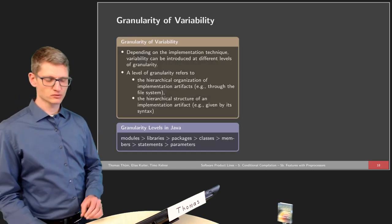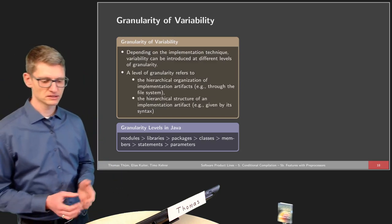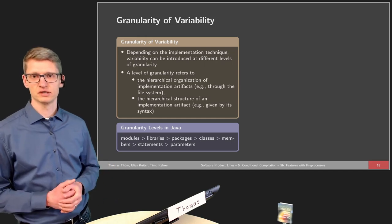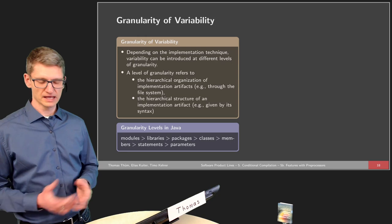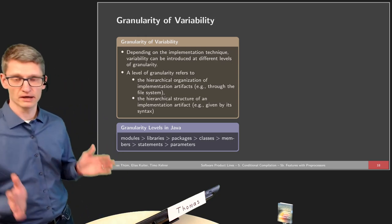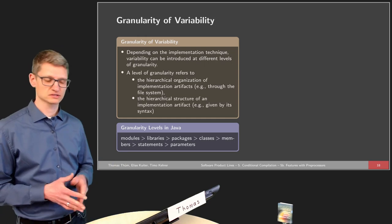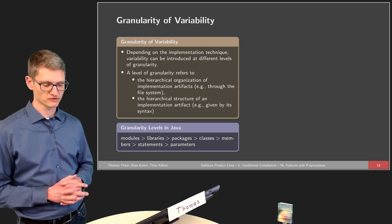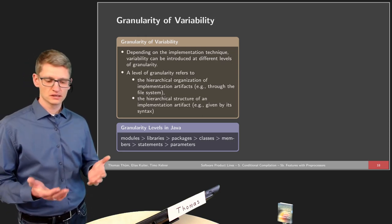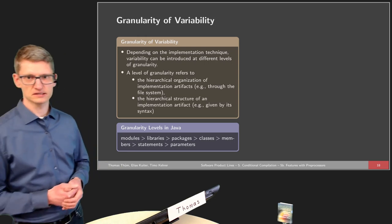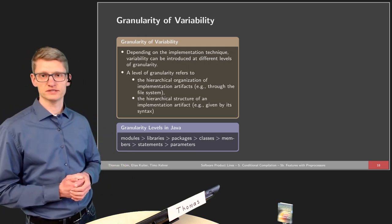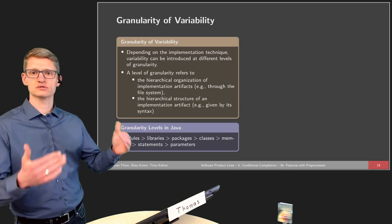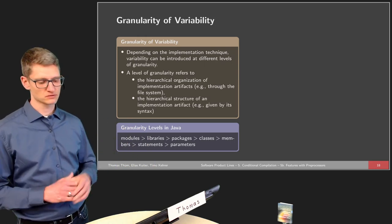To give more detail on what we mean by granularity of variability: depending on the implementation technique, variability can be introduced at different levels of granularity. The level of granularity refers to the hierarchical organization of implementation artifacts — for instance, in the file system, or the hierarchical structure of an artifact given by its syntax. In most cases this means organization into packages, folders, and files, but there is also structure within files given by the syntax.